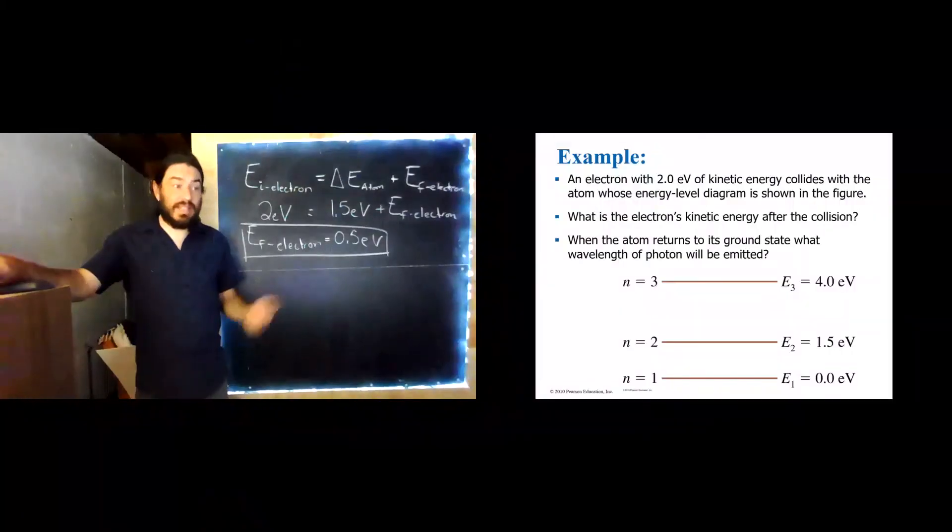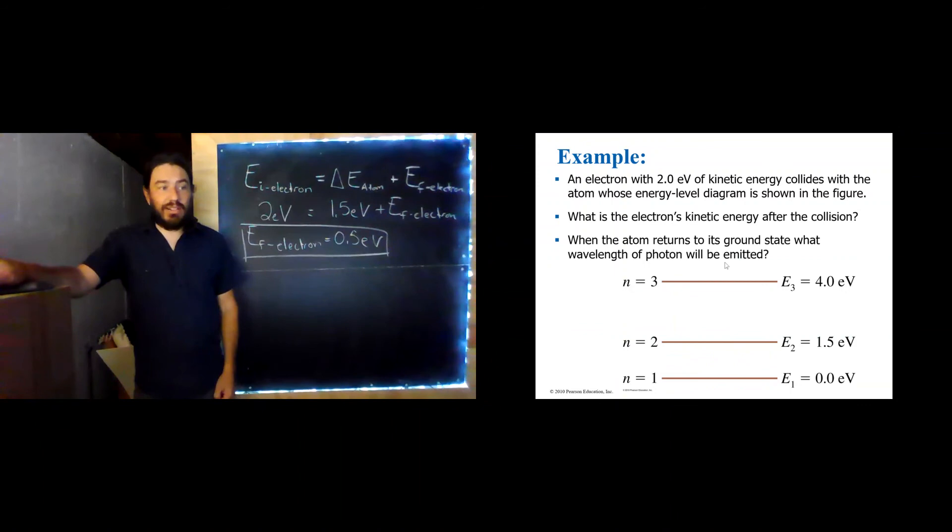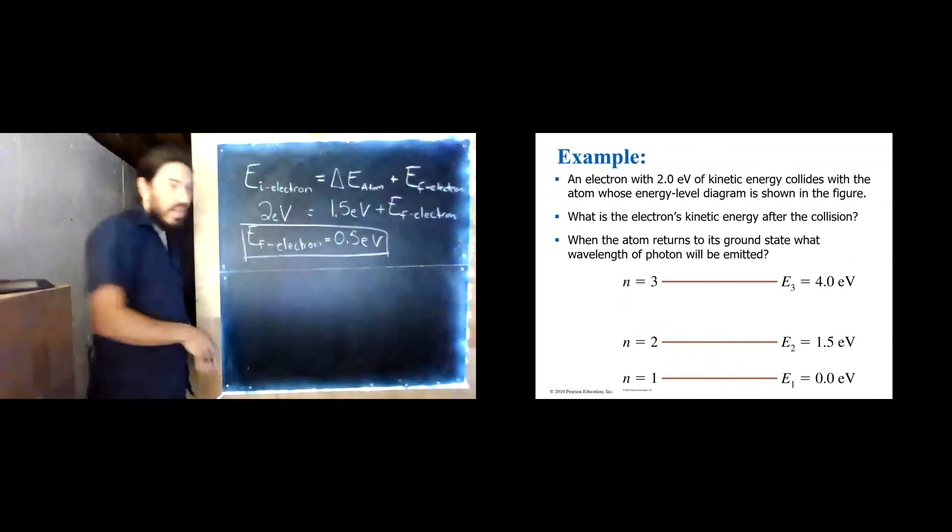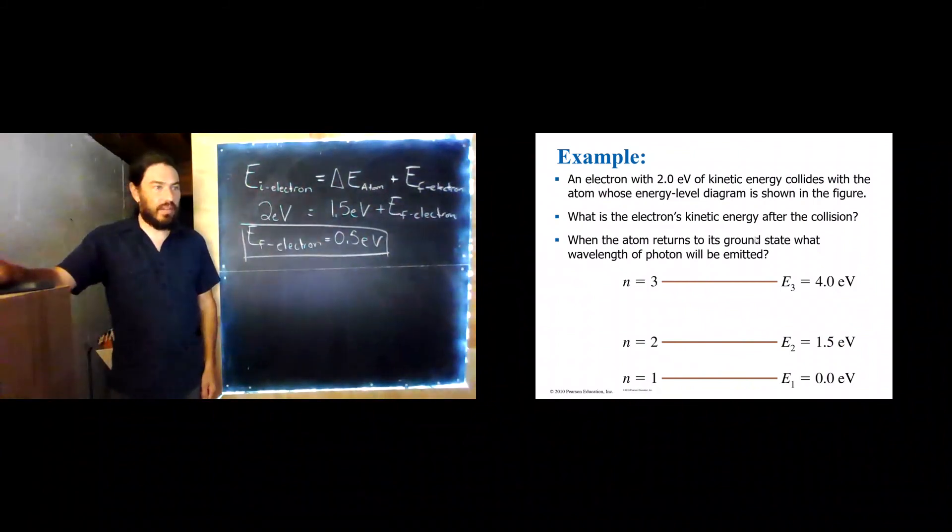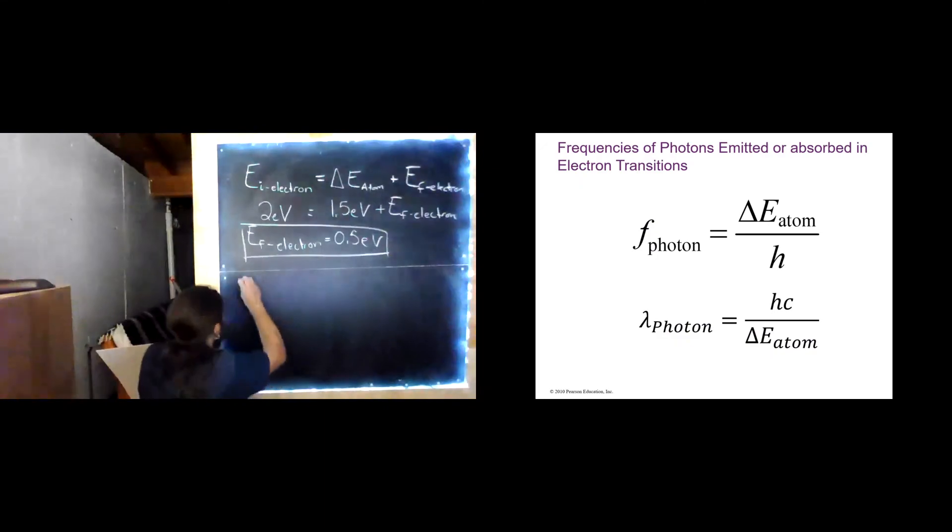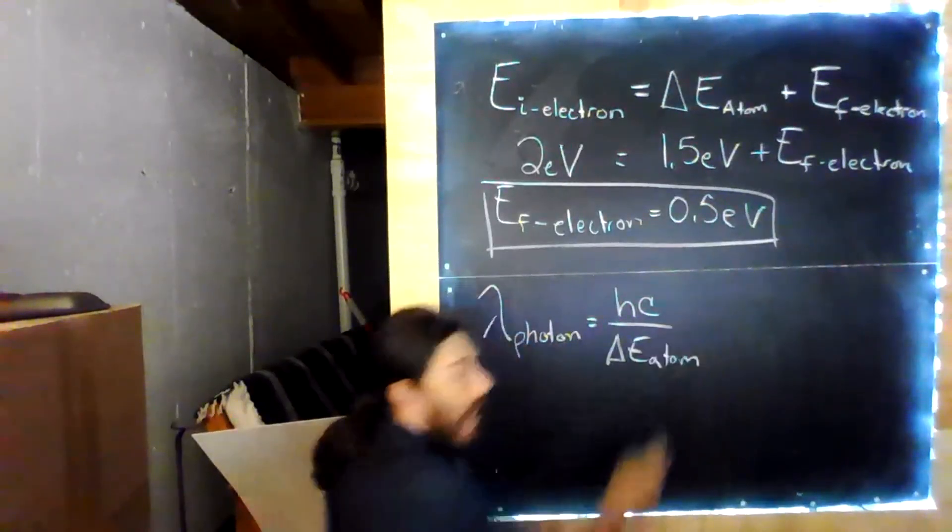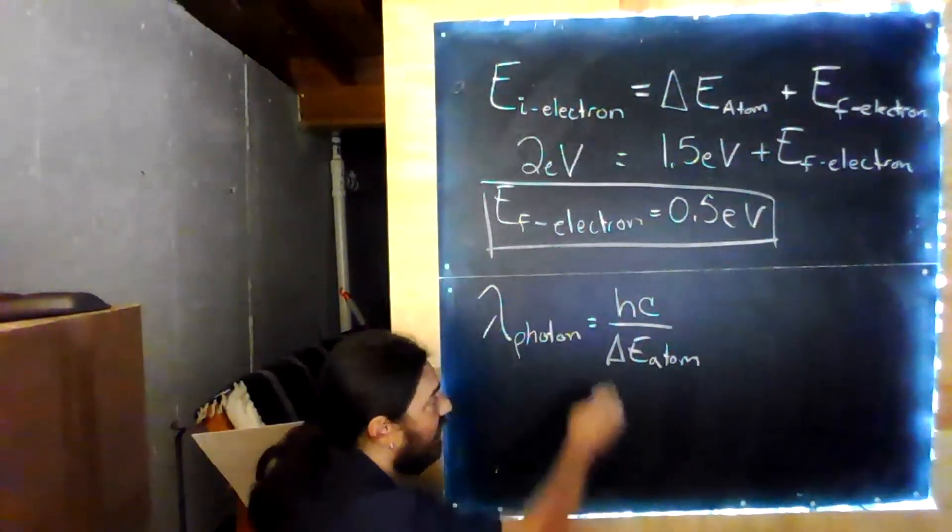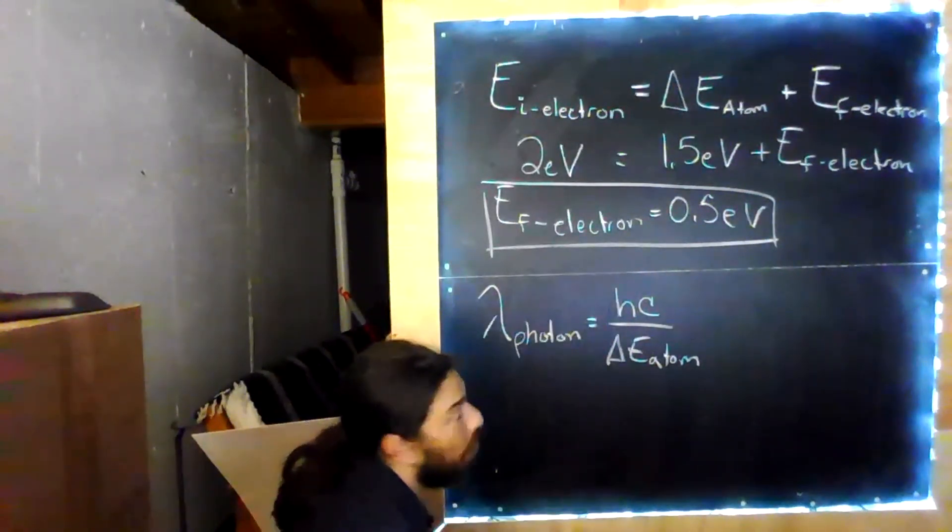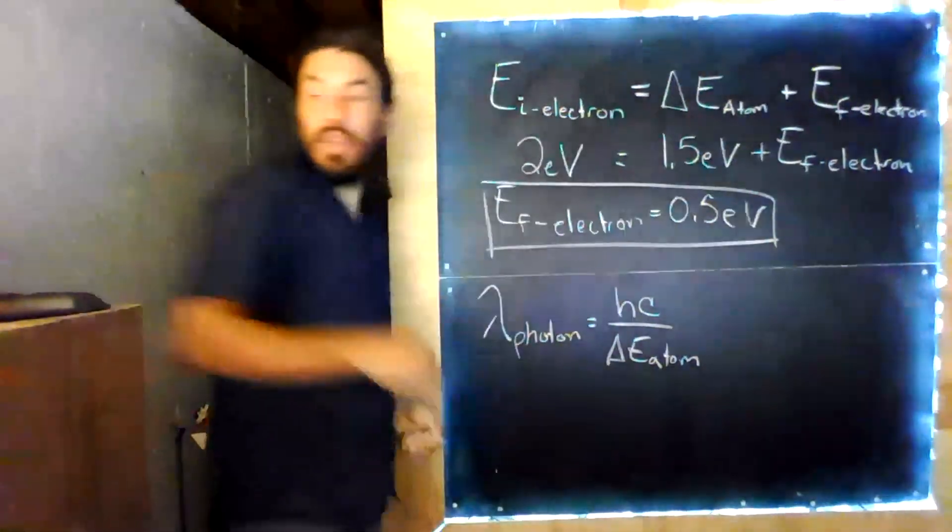So that means now our atom is in the n equals 2 state. When it returns to the ground state, what wavelength of photon will be emitted? Well, in this case, we just want to use this equation here, lambda photon. And in this case, the delta E of the atom now will be 1.5 electron volts, because that's how much energy is released when this atom goes from the n equals 2 state to the n equals 1 state.